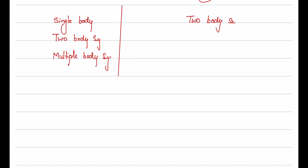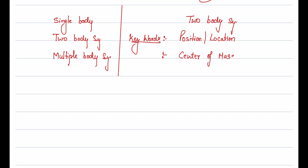Here are the key words you need to understand. First is position or location. Second is the center of mass. Let's say we draw two points: point A with coordinates x1, y1, and point B with coordinates x2, y2. These coordinates represent the position of each point.